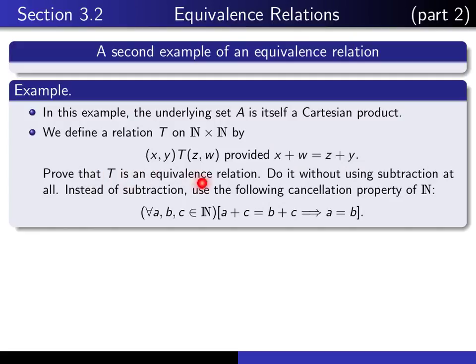I want you to prove that T is an equivalence relation, but with an added twist: don't use the operation of subtraction at all. This is a relation on ℕ × ℕ, where subtraction is not a terribly natural operation. Instead, I want you to make use of the cancellation property of the natural numbers: for any three natural numbers a, b, and c, if a + c = b + c, then a = b. We're going to use that as a tool to prove that T is an equivalence relation.